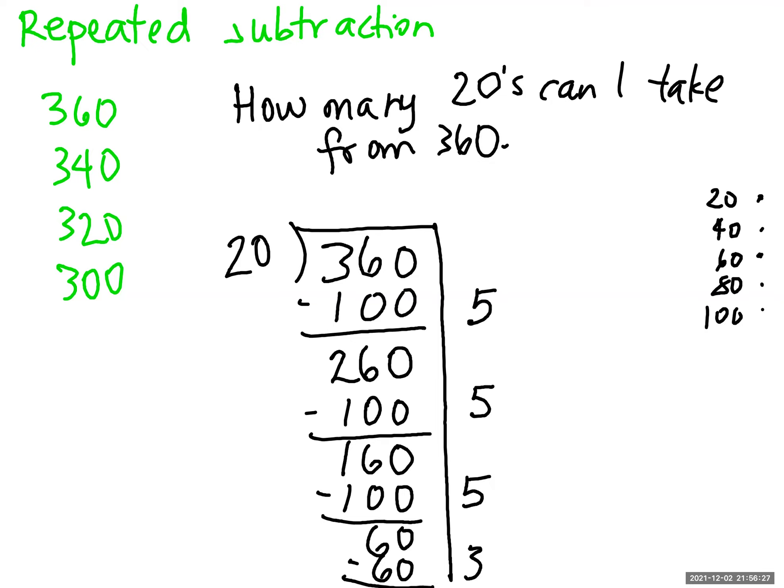I need to add up all the 20s I've taken away. So that's 5 plus 5 is 10. 10 plus, well okay, 5 plus 3 is 8. Okay, 10 plus 8 is 18.